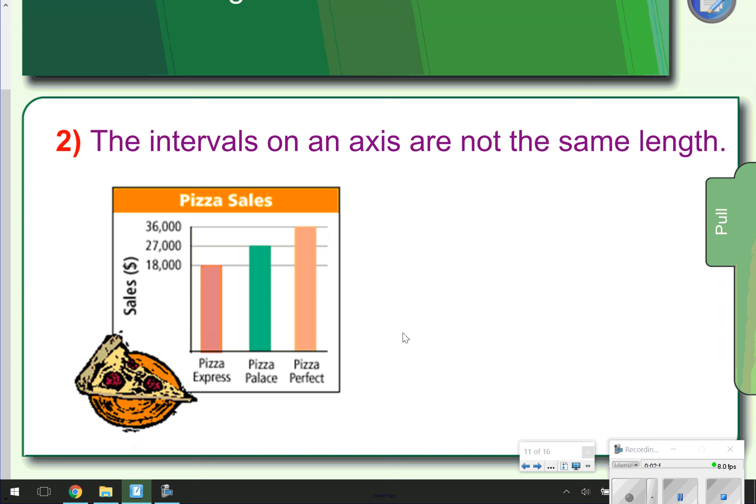Number 2 tells us the intervals on an axis are not the same length. Notice how we go nothing for a little bit, and then we have all the way jumped up to 18,000. This will be another thing that you would need to write in your notes. That is not a good way to represent data on a graph. Go ahead and take the time to pause the video, write and draw the graph, and then press play when you're ready for number 3.